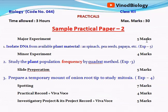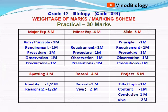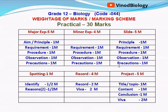Now let's see how marks are allotted. For the first experiment — isolation of DNA — you need to write the aim, principle, requirements, procedure, observation, and precautions. For the minor experiment, the same format applies. For slide preparation, you write principle, aim, requirements, procedure, observation, and precautions. Precautions are very important for successful practical completion. In observations for slides, how you view the slide under the microscope is included, and for the minor experiment, your density and frequency calculations are part of observation.